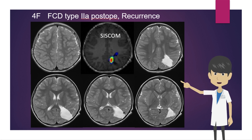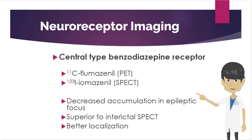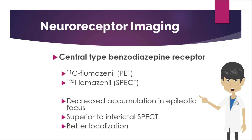In addition to brain perfusion SPECT and glucose metabolism PET, neuroreceptor imaging can be used to detect epileptic focus with reduced central-type benzodiazepine receptors using carbon-11 flumazenil PET or iodine-123 iomazenil SPECT. The area of receptor reduction is narrower than the area of decreased perfusion and metabolism in the epileptic focus, allowing more accurate localization. It is also reported to be better at detecting focus than brain perfusion SPECT in the interictal phase.